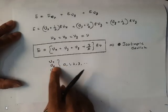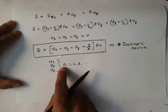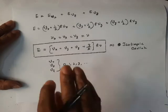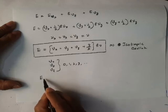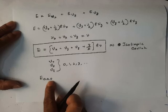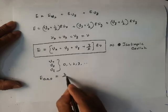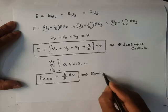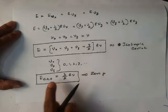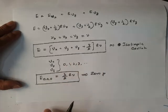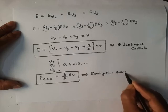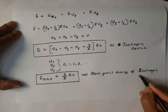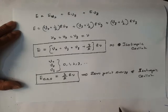If I put vx = 0, vy = 0, vz = 0, I will get the lowest possible value of energy. The lowest possible value of energy is 3/2 hν. This is called the zero-point energy, because classically the lowest possible energy is 0, but quantum mechanically the lowest possible energy for the isotropic oscillator is 3/2 hν. Keep this in mind — it is very important.